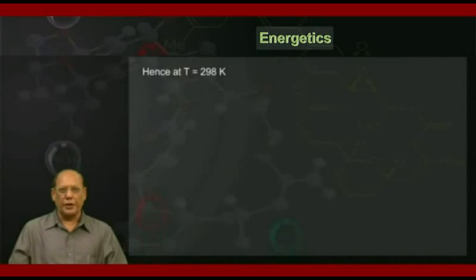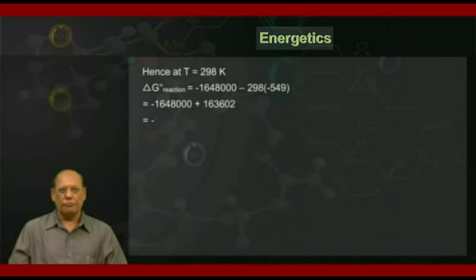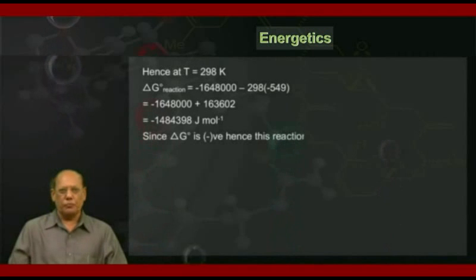At T = 298 K, ΔG° of the reaction equals -1,648,000 - 298 × (-549). On solving, this comes out to be -1,484,398 J/mol. Since ΔG° is negative, this reaction must be spontaneous at 298 K. That becomes the answer.